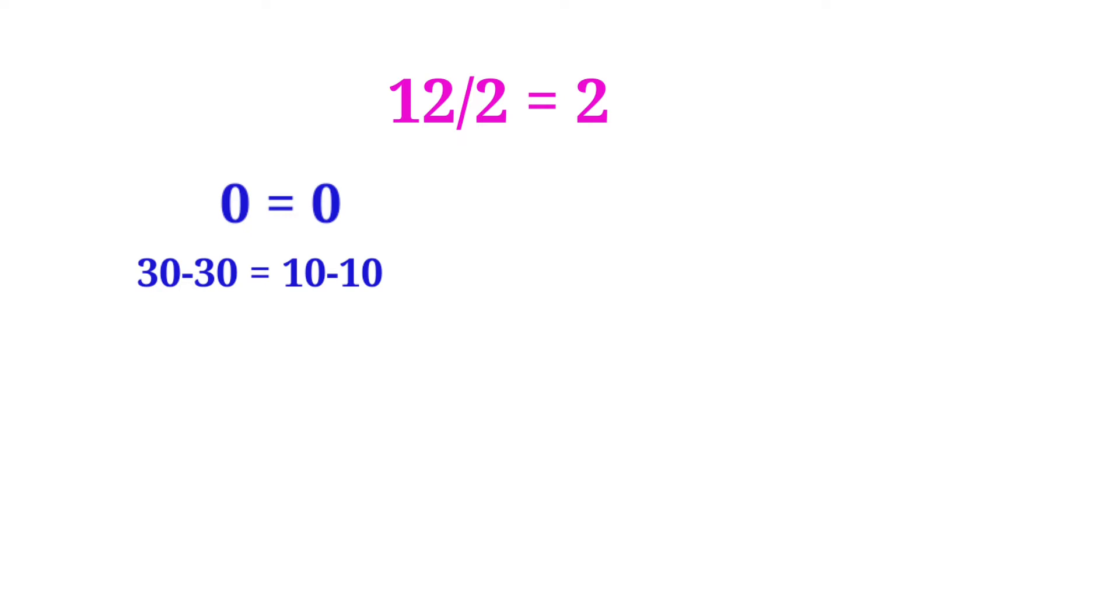So 30-30 is equal to 10-10. Now we can write the 30 as 6×5 and the another 30 also 6×5. And we can write the 10 as 2×5 and the another 10 also 2×5. So 6×5-6×5 is equal to 2×5-2×5.